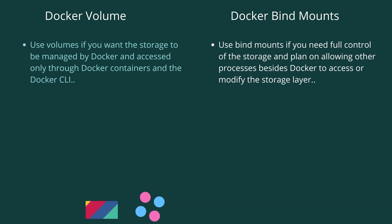You can use docker volume if you want the storage to be managed by docker and storage which can be accessed only through the docker containers and the docker CLI. On the other hand, you can use bind mount if you need full control of the storage and if you plan on allowing other processes besides docker to access the storage.